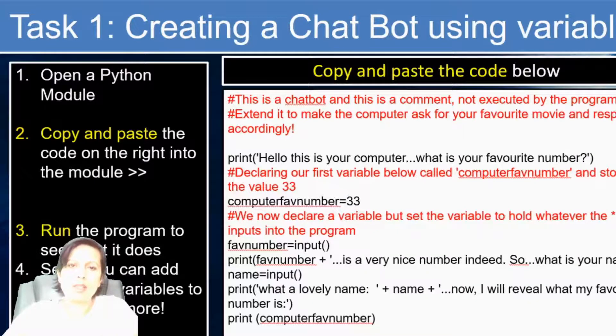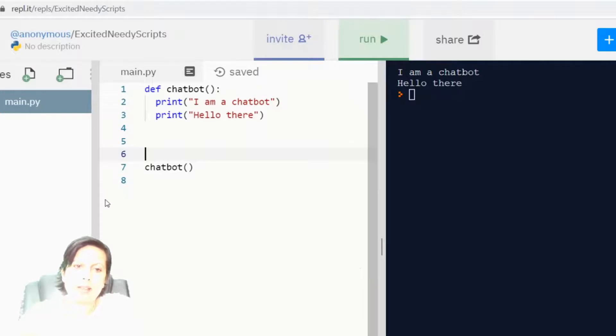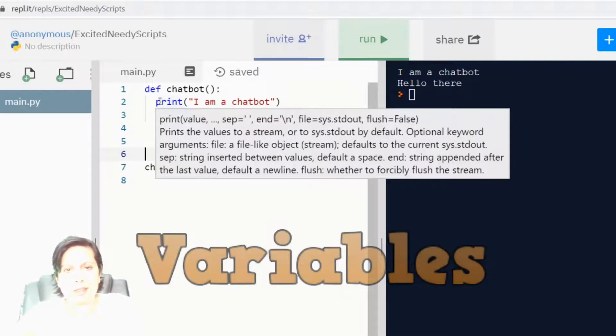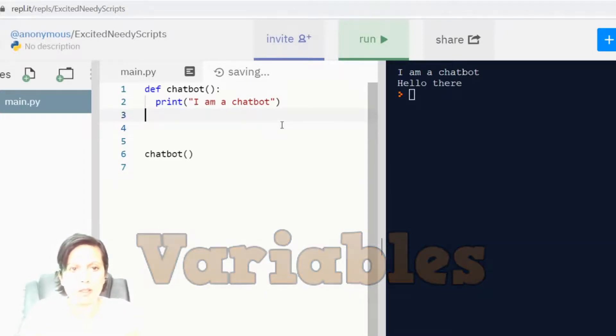And using that knowledge that we just talked about, variables, we're going to now extend the chatbot to actually create some variables and create what resembles an artificially intelligent chatbot. With our newfound knowledge on variables, we're going to actually extend our little chatbot, which doesn't do anything interesting, and use some variables. Like we said, a variable is something that stores a value. And something you might want to ask a user, if you're pretending to be a chatbot, is, what is your name?